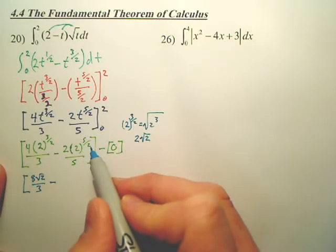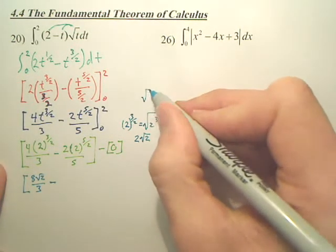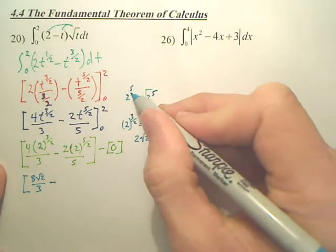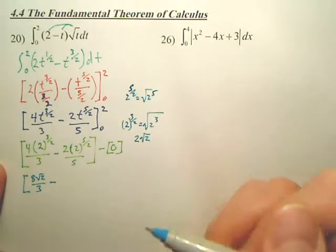what's the second term? So that's eight square root two over five.